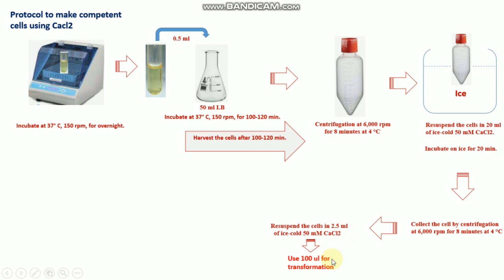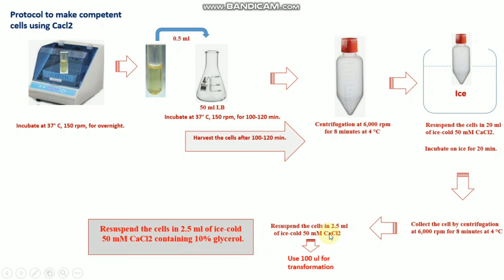From this final resuspension you can use approximately 100 microliters directly for transformation. If you would like to store the cells, add 10% glycerol and store at -20°C or -80°C for a longer time period. I hope this video will be helpful. If you like it, please hit the like button, share it, write any comments below, and don't forget to subscribe to my channel. Thanks!